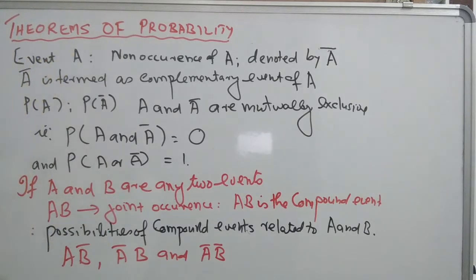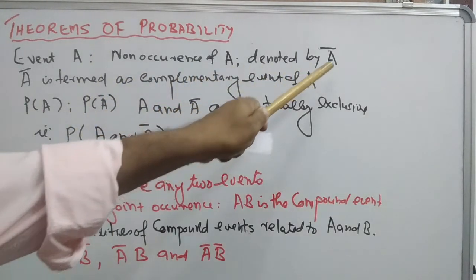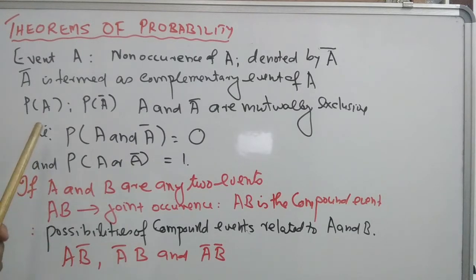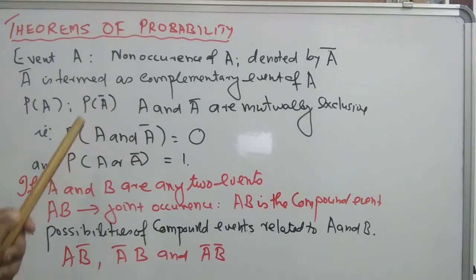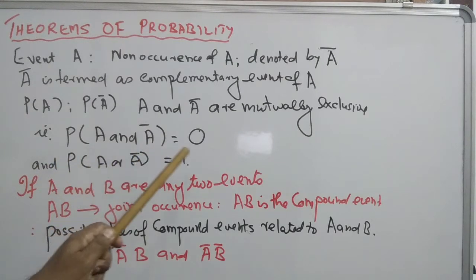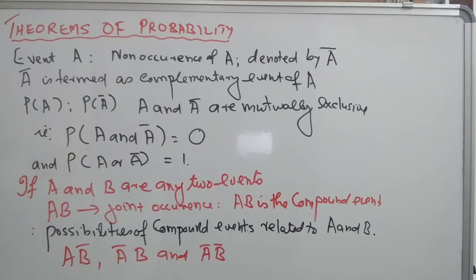Let A be an event. Its non-occurrence is denoted by A-bar, where A-bar is termed as the complementary event of A. P of A denotes the probability of occurrence of A, and P of A-bar denotes the probability of non-occurrence of A. A and A-bar are mutually exclusive — simultaneous occurrence of A and A-bar in a single trial is impossible, for example, success and failure. So P of A and A-bar is zero. P of A or A-bar is certain, therefore probability of A or A-bar is one.